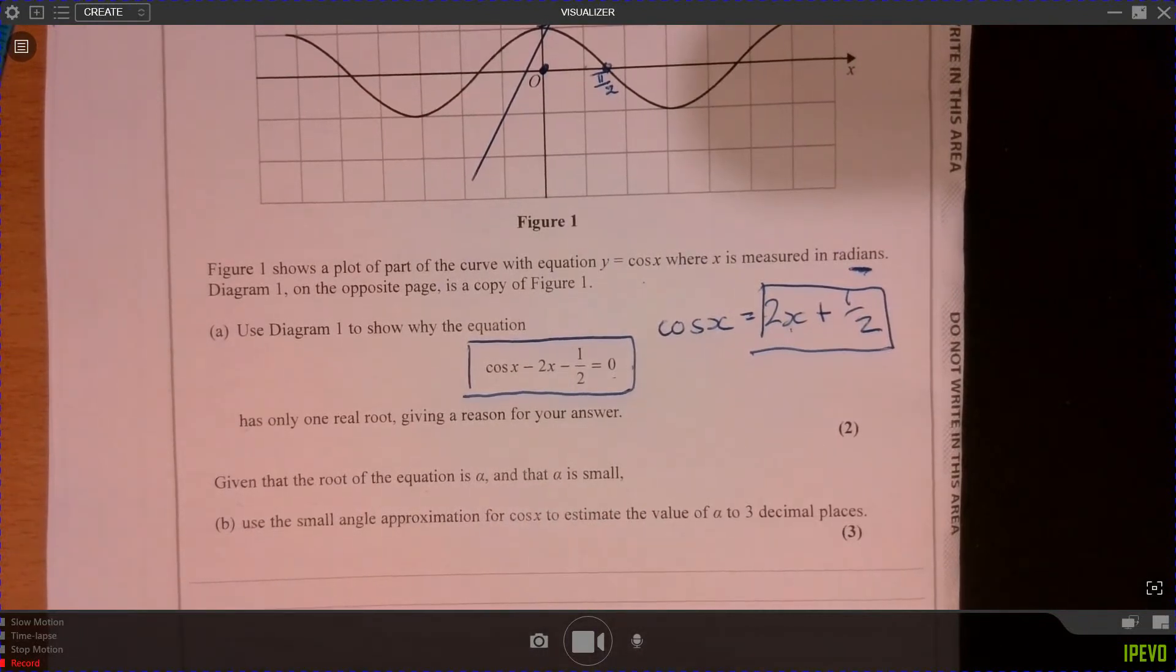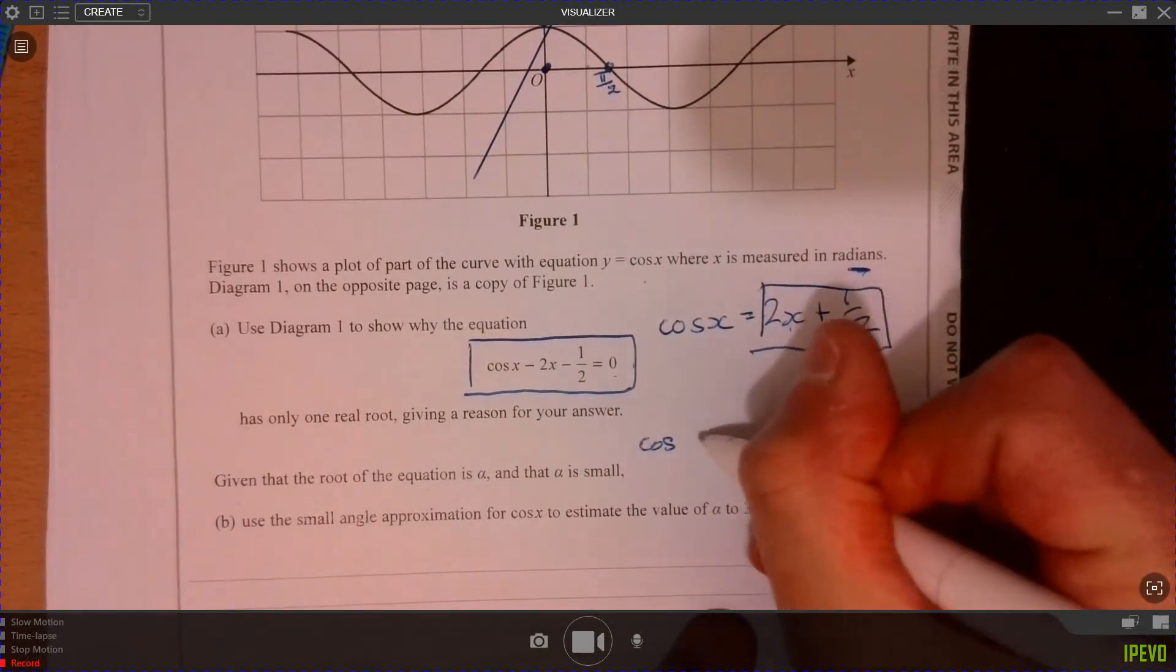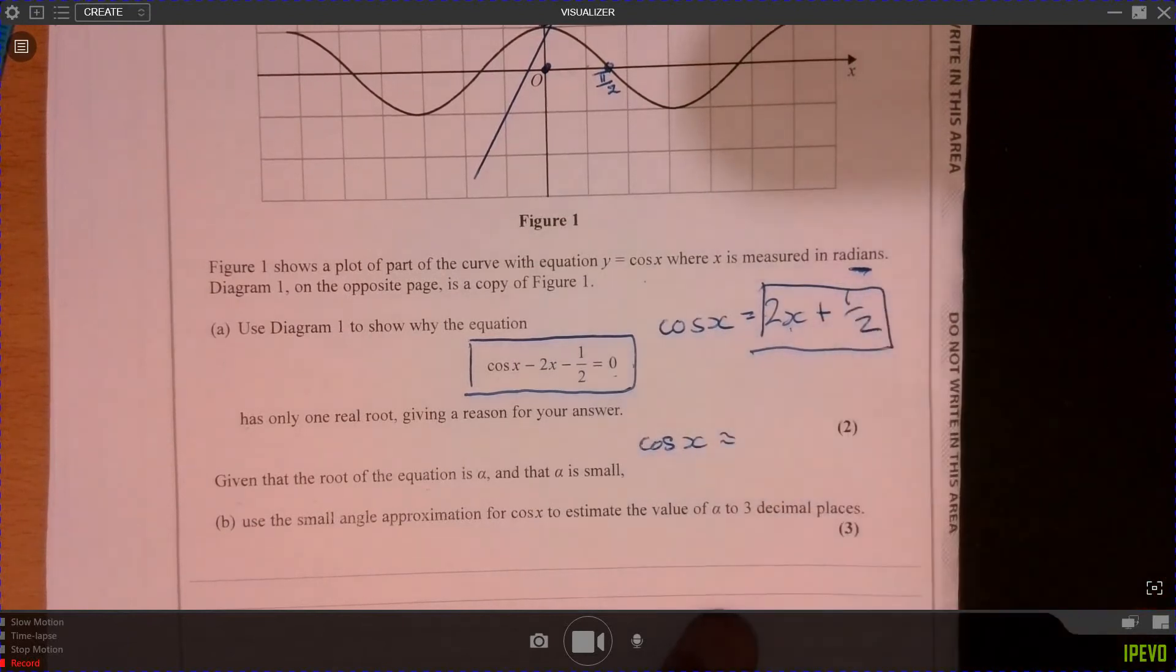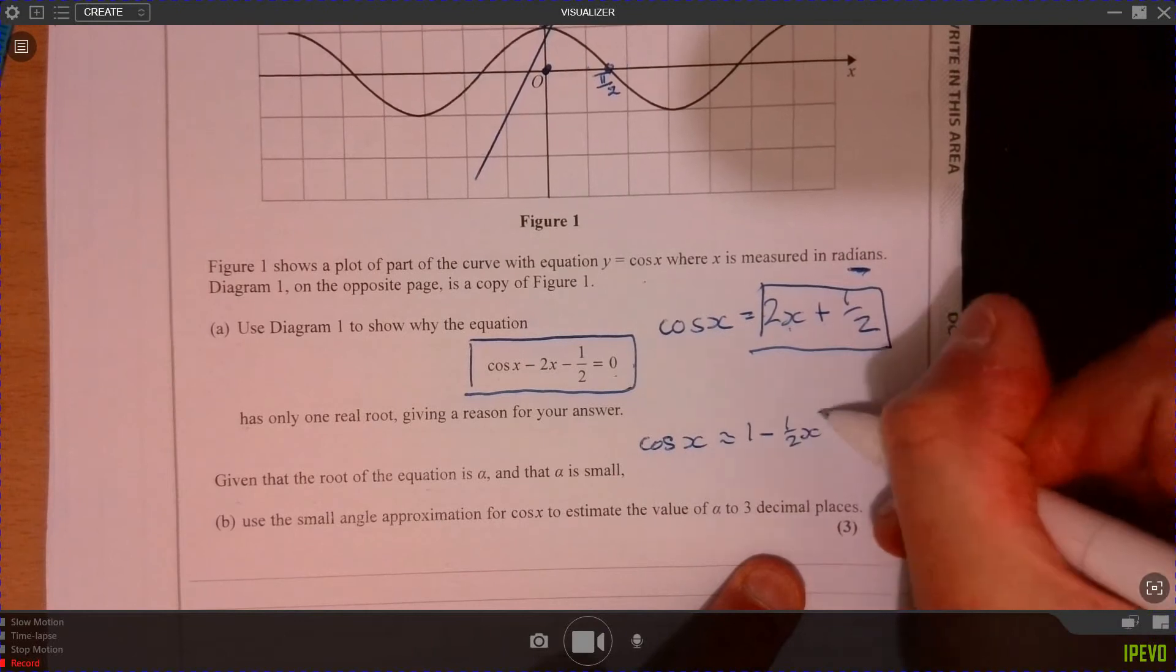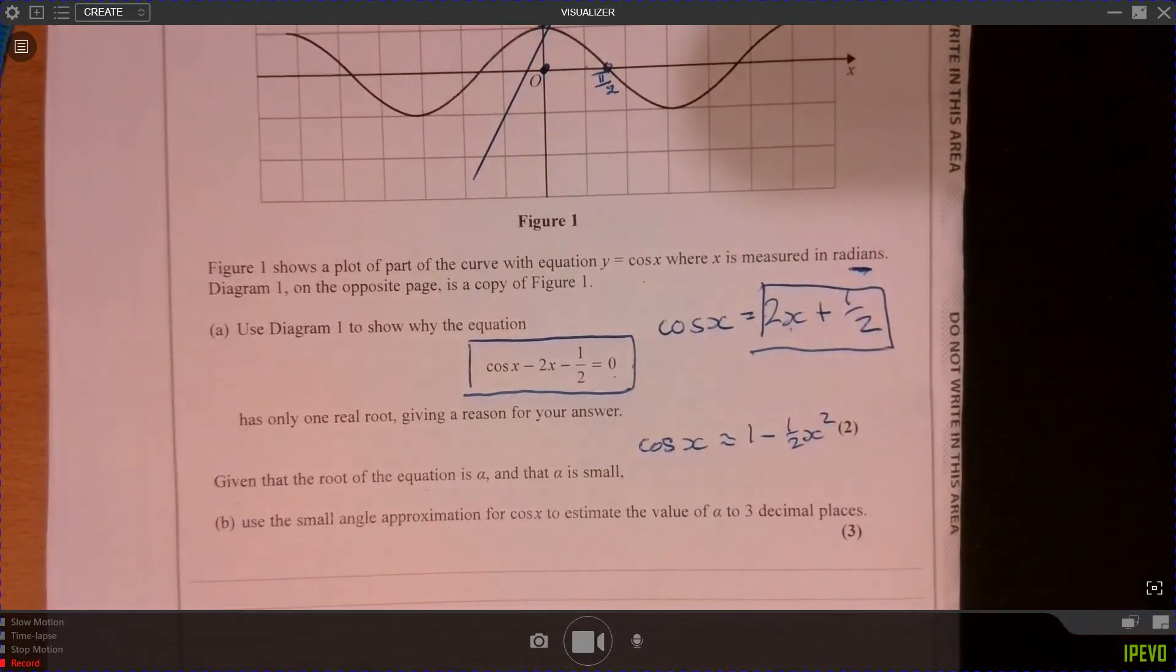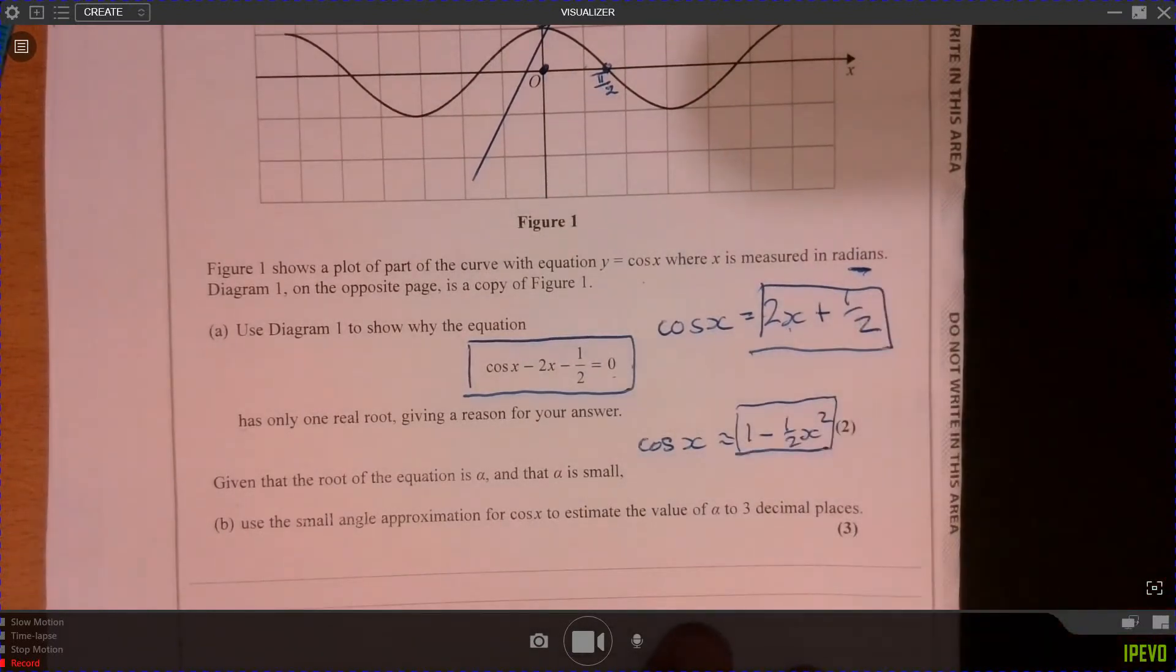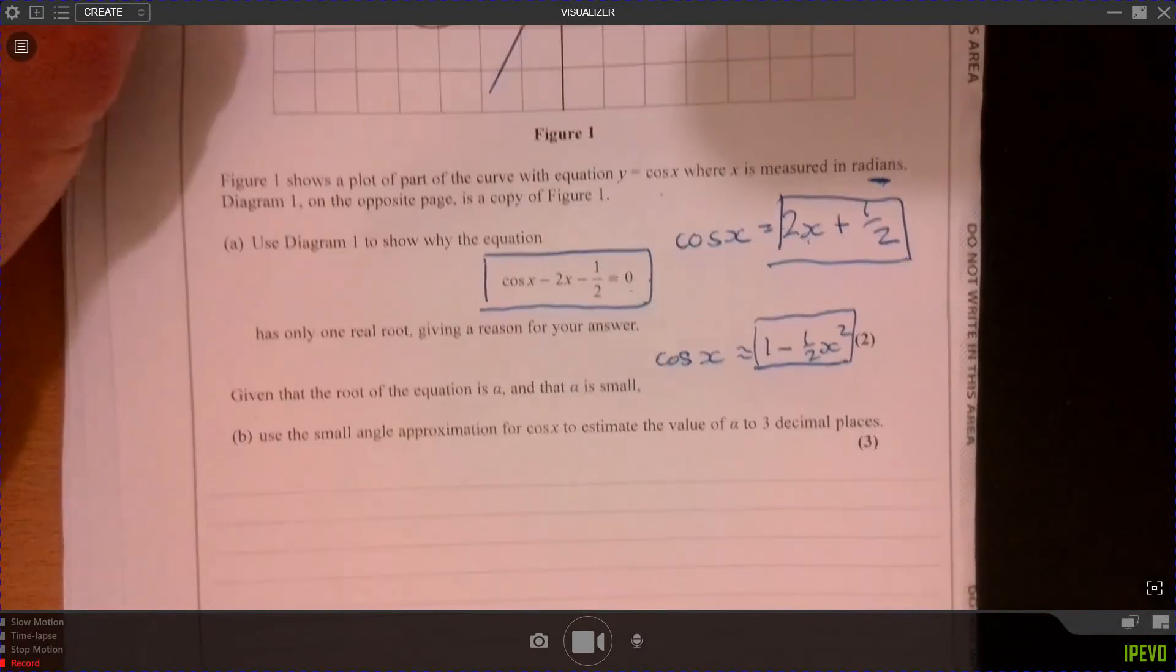So you should know that, and this is actually in the formula book, that when theta is small, the approximation is 1 minus half x squared. Obviously, it says that in terms of theta. So we can just replace cos x with that bit just there. So let's have a look and see what happens.